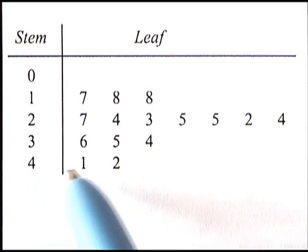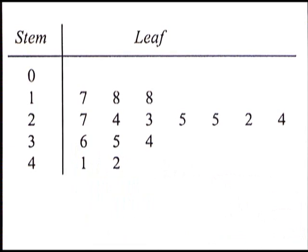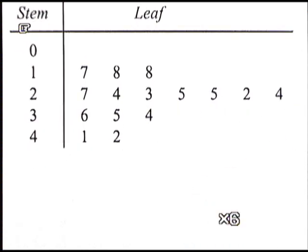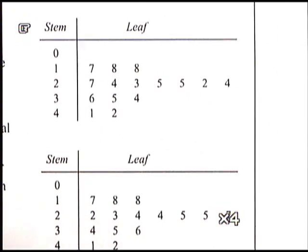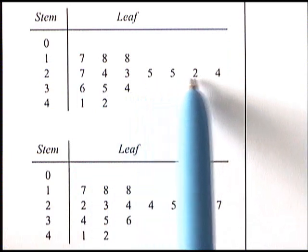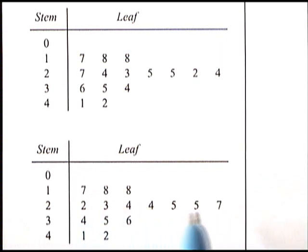All you're really doing is putting the stem digit in front of the leaf digit. For example, this one here represents a mark of 41, and this 5 here is a mark of 35. The lowest mark was 17 and the highest was 42. It's even easier if you change it to an ordered stem and leaf diagram. The only difference is that this row is now written in order from smallest to biggest.